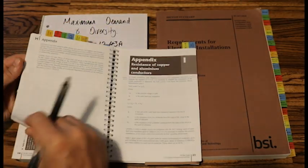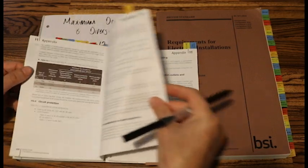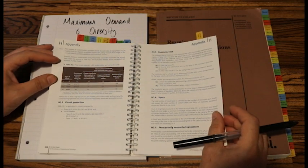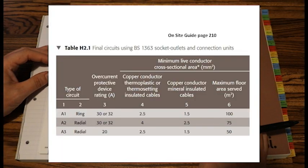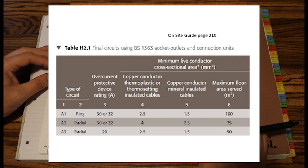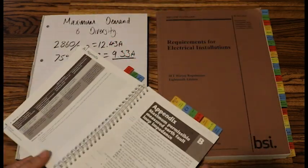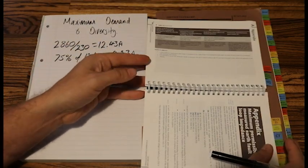These are standard circuits. That will be on page 210, Table H2.1. They are our standard circuits: A1, A2 and A3 circuit. If our circuits comply with those, if it's A1, A2 or A3, then that's what we would use, row 9.